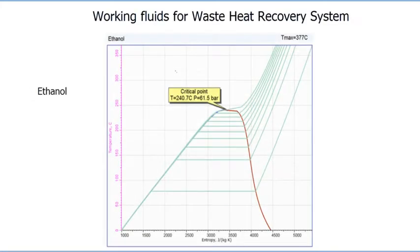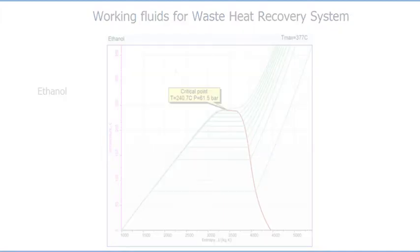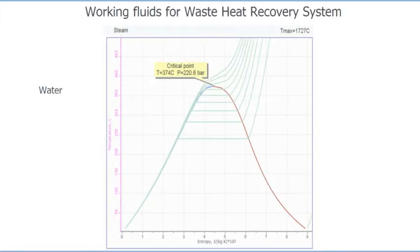Ethanol has a maximum available temperature of 377 Celsius. Water steam is featured with a critical point of 347 Celsius and pressure of about 220 bar, with a maximum available temperature of 1727 Celsius.